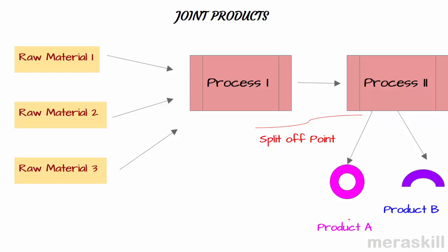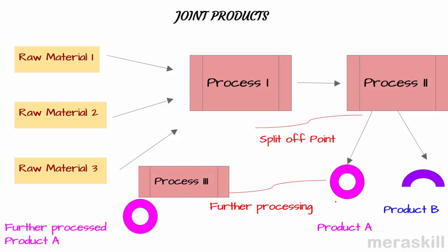It is possible that product A may be sold as it is or we process it further and then sell product A. Both the not fully processed product A and the further processed product A may have their own market values. Obviously this more further processed product A is going to be more costly than the product which is sold at the split-off point without further processing.